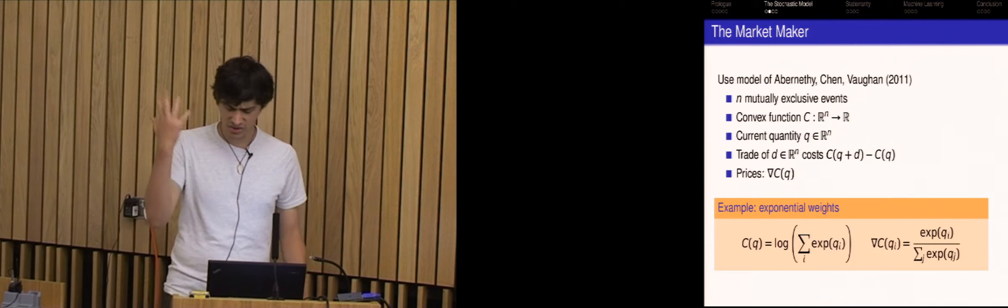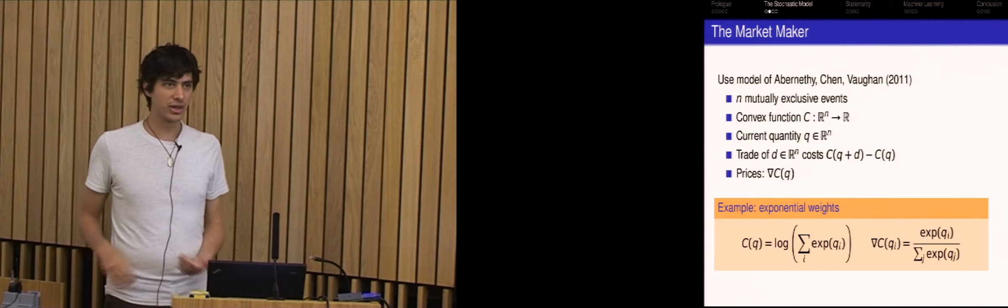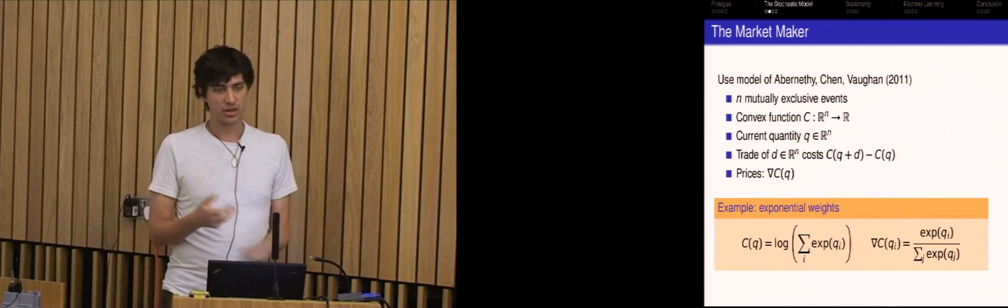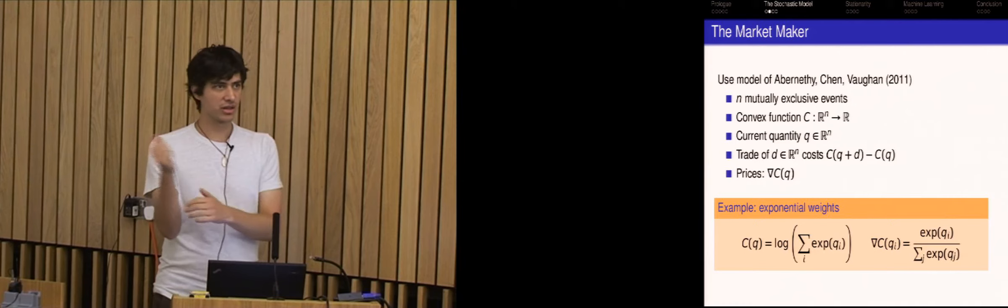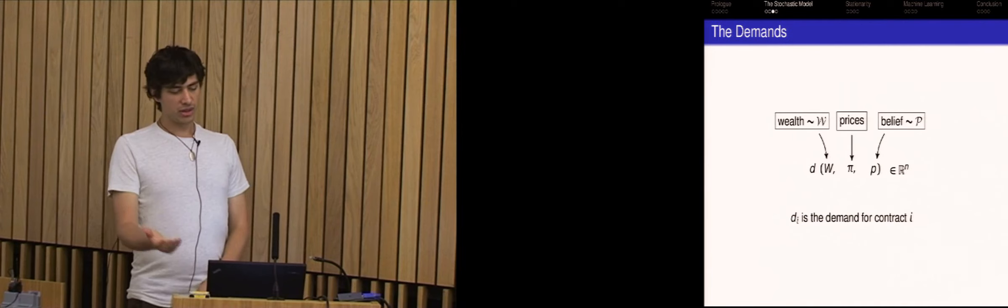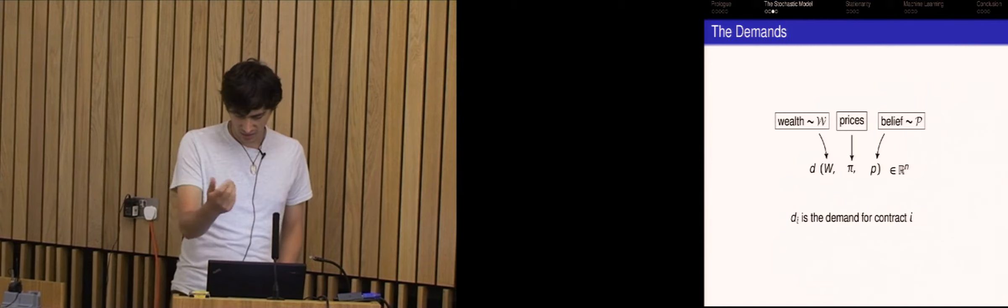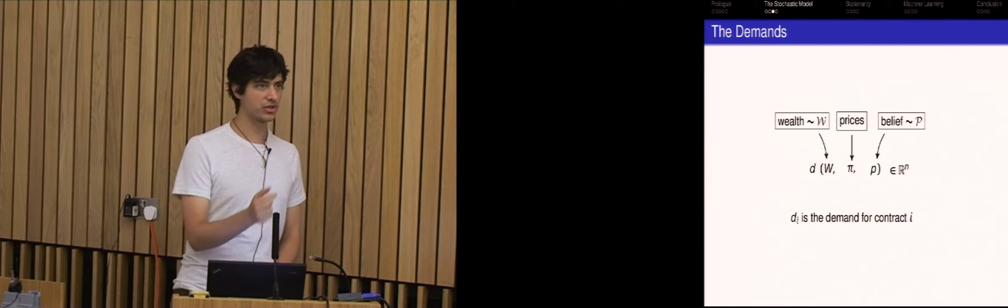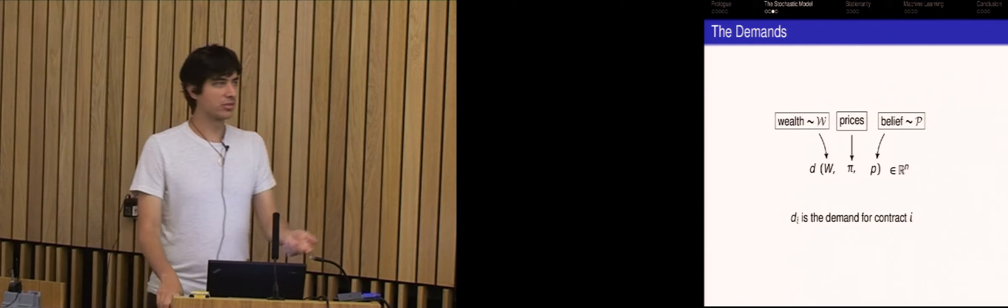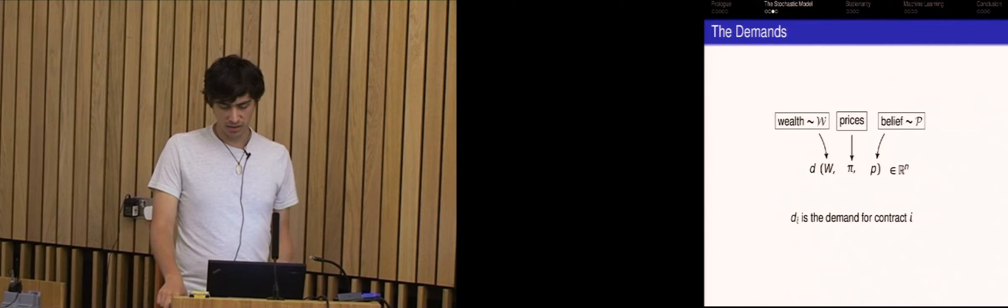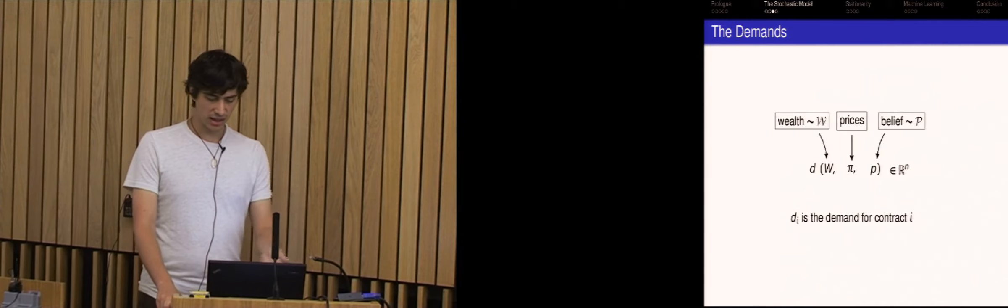So now when the shares are at Q, if someone comes in and asks for demand D of some bundle D where D_i is how much they want for contract i, that's going to cost them this difference in the potential function C essentially between the new quantity vector and the old quantity vector. And the prices here, where'd the prices go? Well, the prices are sort of the derivative of this function at the current quantity. And you can see this by thinking about buying an infinitesimal amount and looking at the price per share of that amount. And that'll get you the derivative.